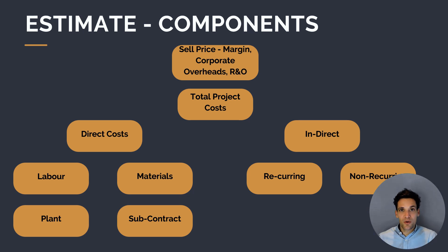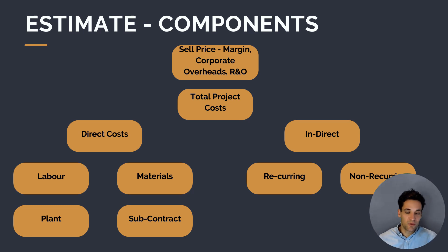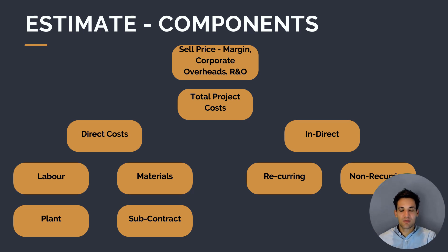For example, if we need to pour a concrete foundation, we've got the costs of the laborers needed to do it, the costs of the concrete pump and other equipment, the cost of materials such as the concrete, the reinforcement, and the formwork, and then any subcontract costs — for example, if we're using a crane to lift equipment into position, we'll have subcontract costs associated with that.